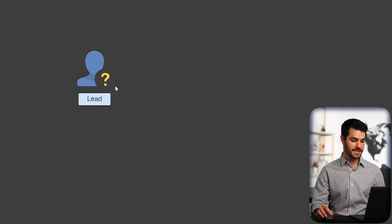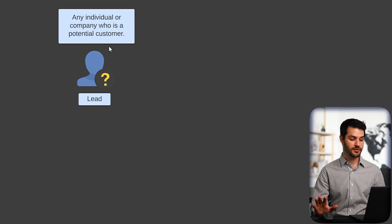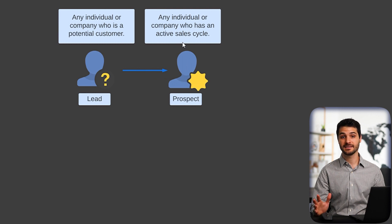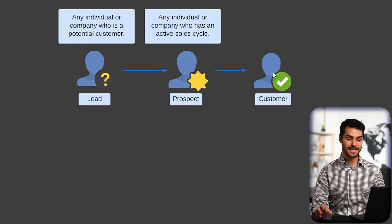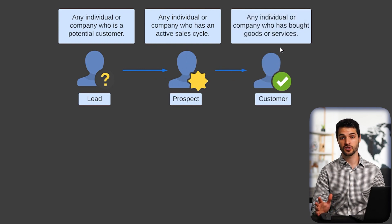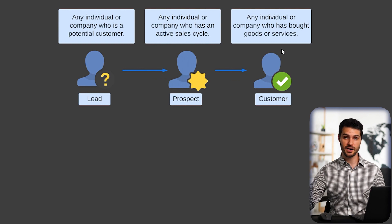A lead is basically any individual or company who is a potential customer — just broadly anyone who could be a customer at some point. From lead, we go to a prospect, which is any individual or company who has an active sales cycle — something has been started with them. We register them as a prospect, and then they move on to being a customer, which is any individual or company who has bought goods or services from the company. That last one — customer — is actually the beginning of the order-to-cash process flow.